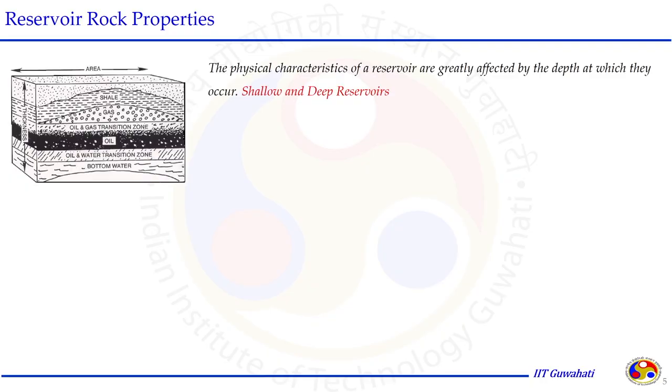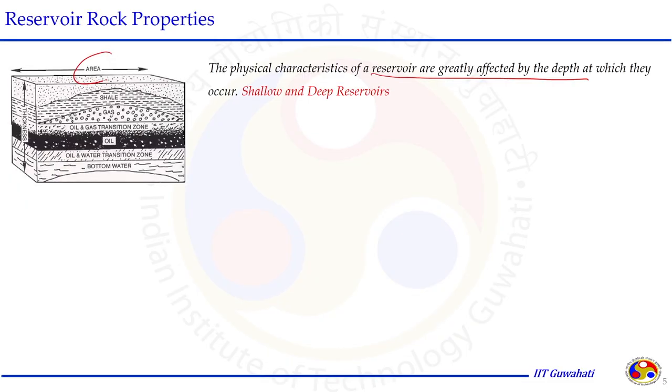Let us understand the reservoir dimension first. The physical characteristics of a reservoir are greatly affected by the depth at which they occur. Reservoirs spread from several thousand feet depth and could be shallow or very deep. From common understanding, as we go deeper, properties like porosity and permeability reduce, and the chances of finding a gas reservoir increase. Let us restrict our discussion to the dimensions of the reservoir — area and thickness.